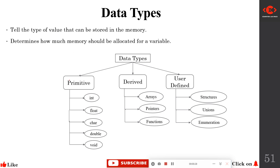We have three types of data types. Primitive data type — also called primary, fundamental, or built-in data type — includes int, float, char, double, and void. Int is for integers, float for floating point numbers, char for character data, double is also part of floating point numbers. Derived data types are derived from the fundamental data types and include arrays, pointers, and functions.